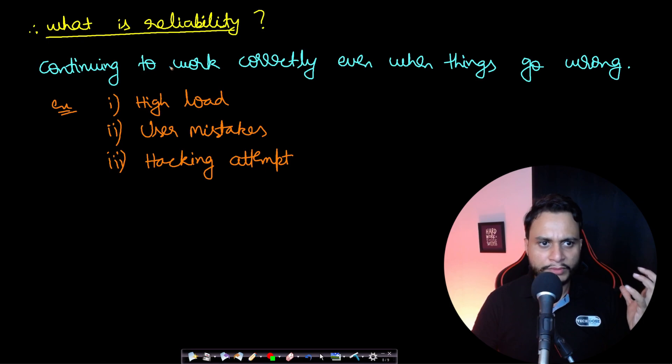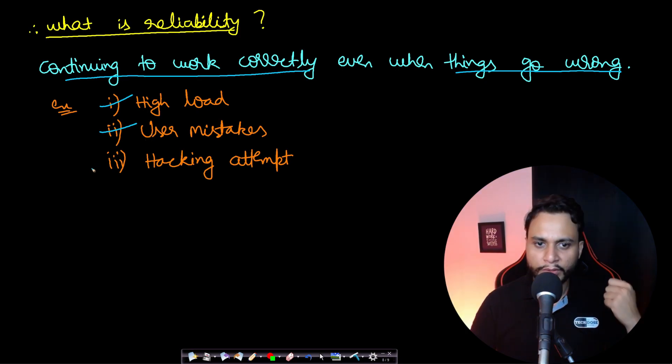Therefore, now we can talk about reliability as something which is continuing to work correctly even when things go wrong. What are the things which go wrong? Like you can see a spike in load suddenly due to sales, there can be user mistakes as we saw, or there can be a hacking attempt which you need to prevent. So if your system works correctly, then it will be said to be more reliable.